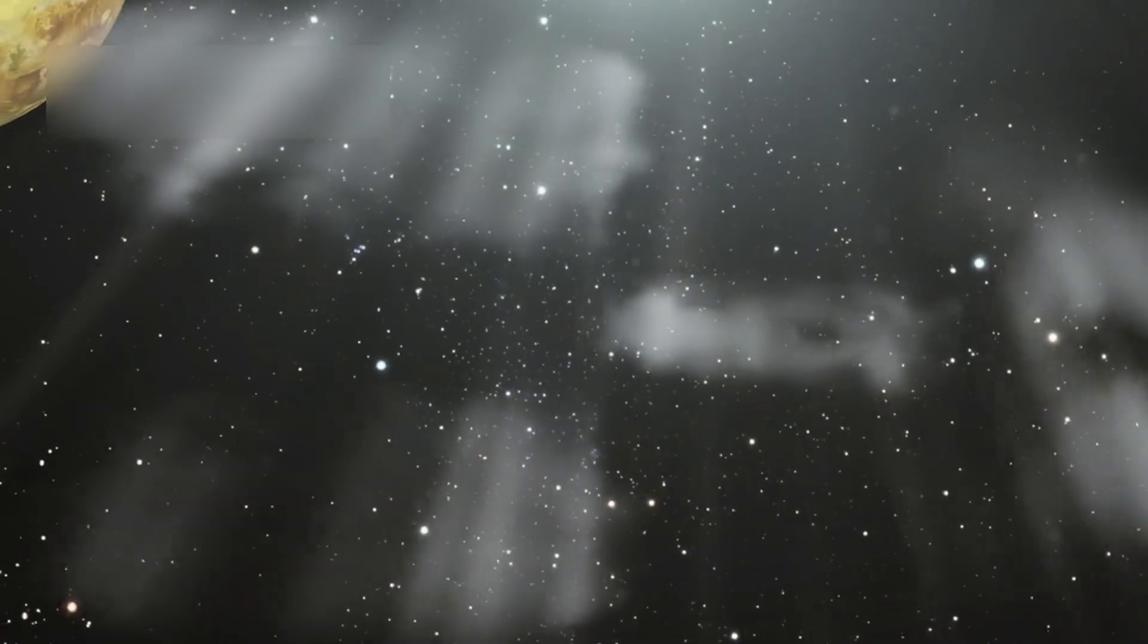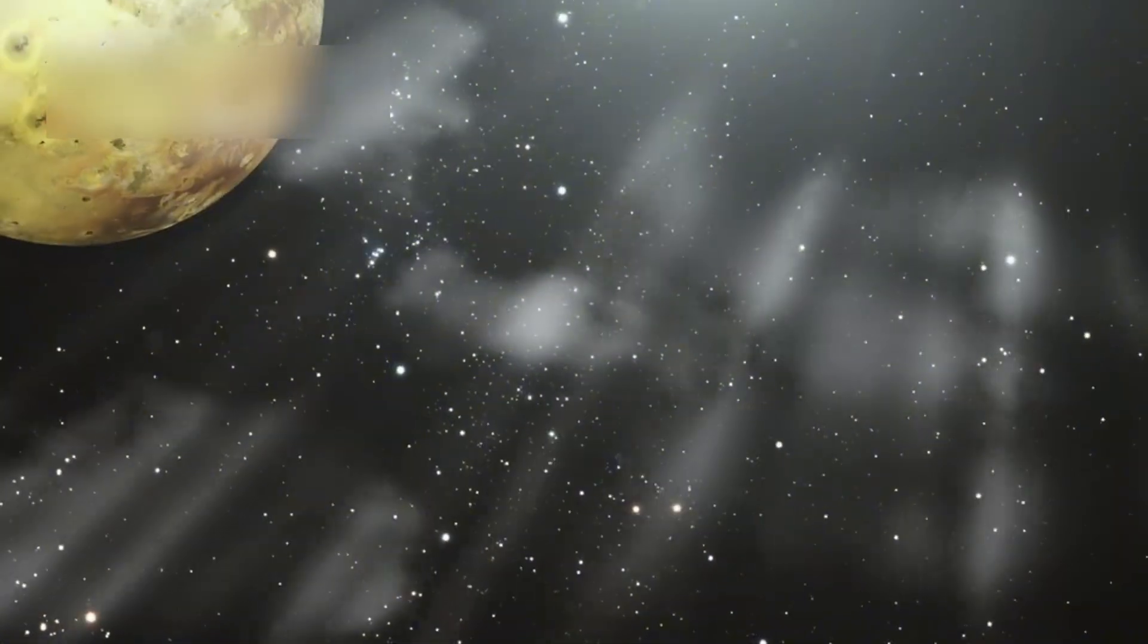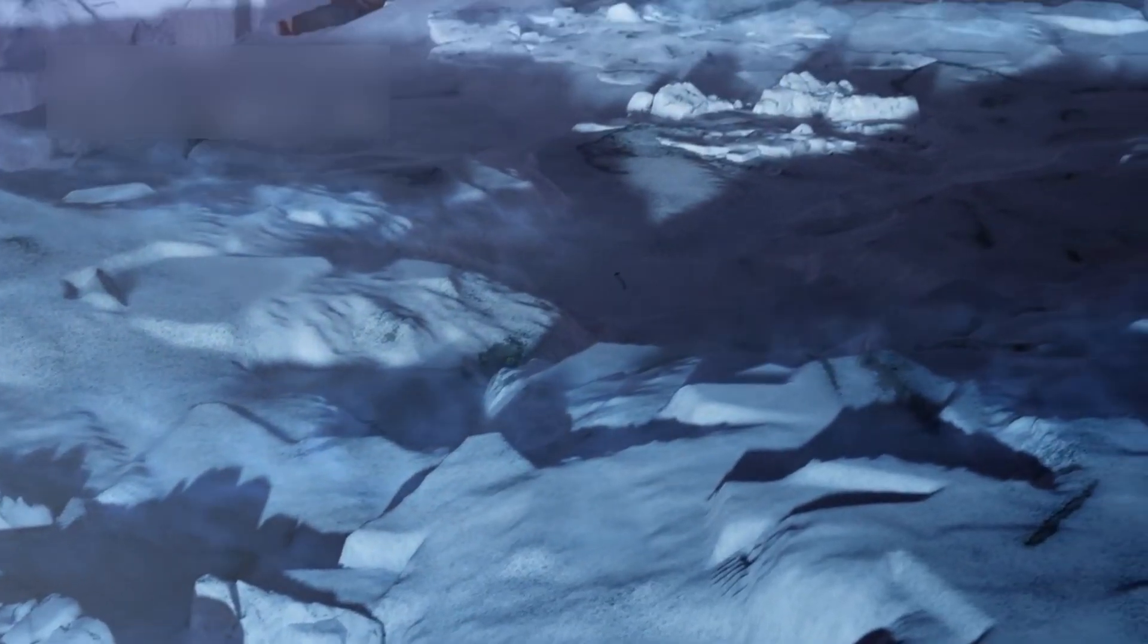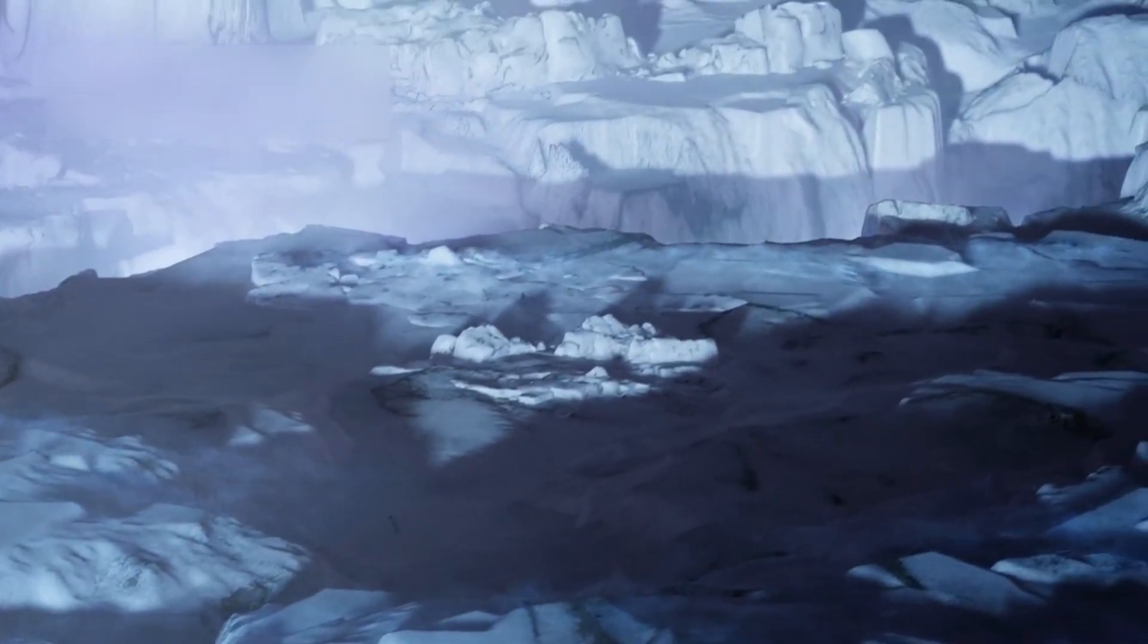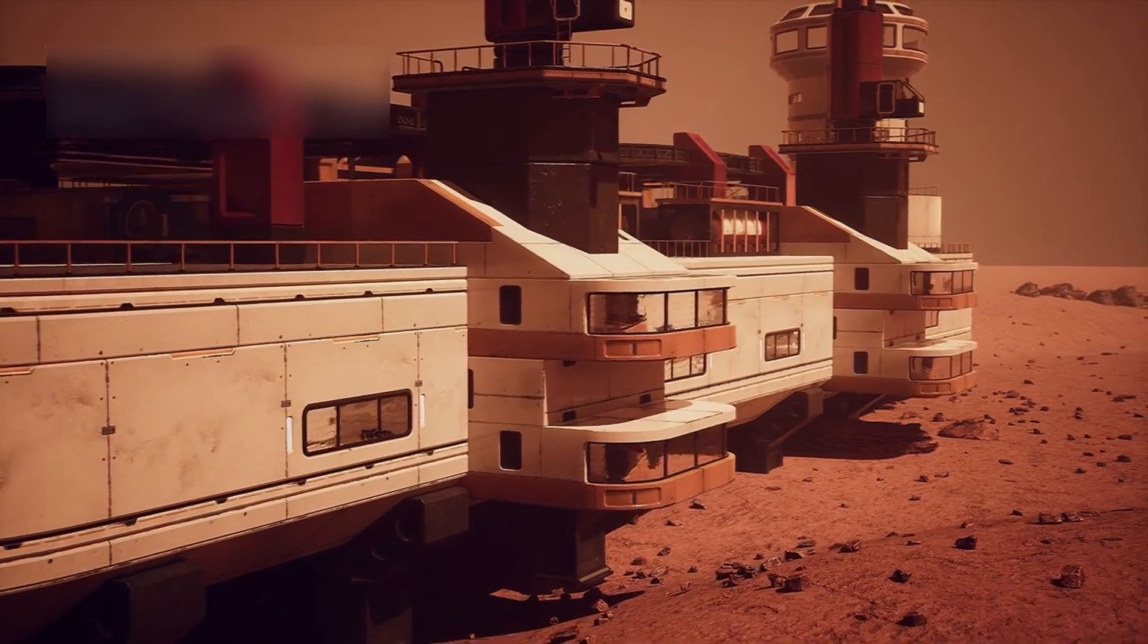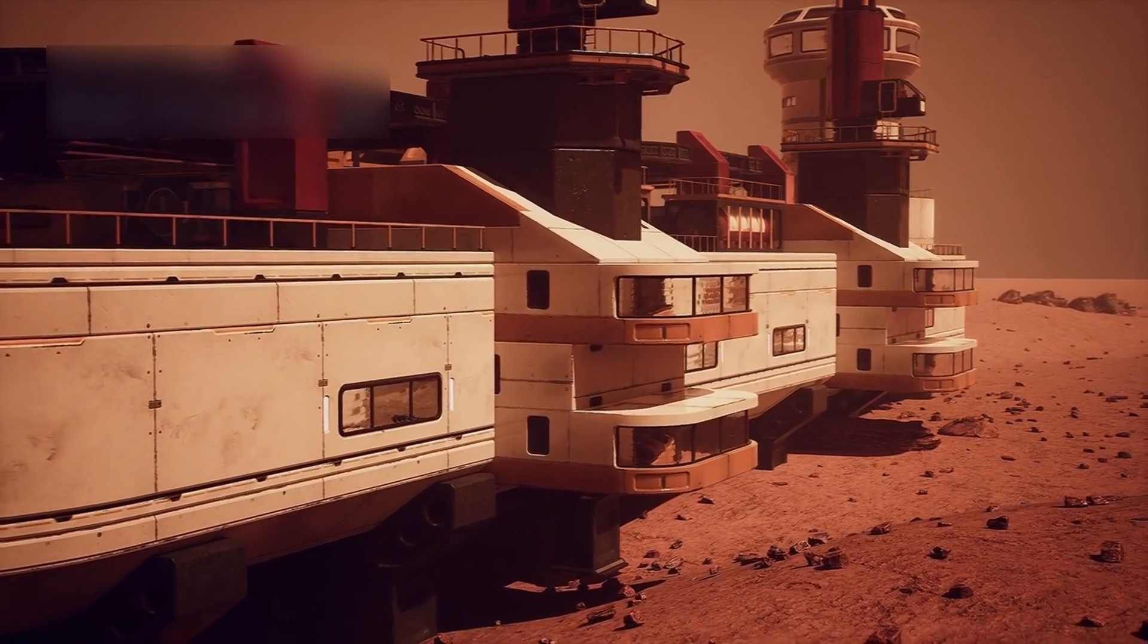This made Io the most volcanically active body in the solar system. Europa, another moon, showed signs of an ocean under its ice. That sparked new dreams of finding alien life someday.